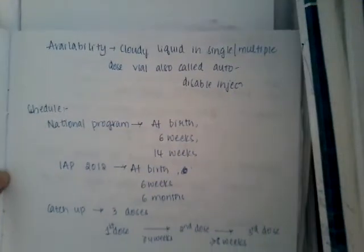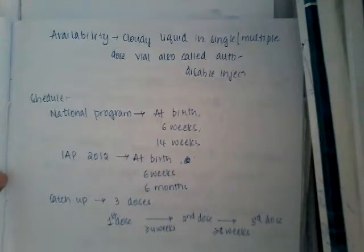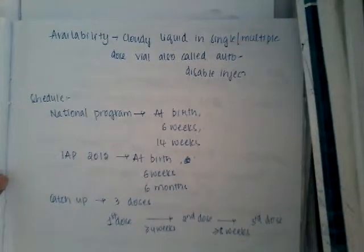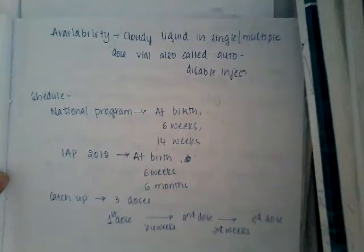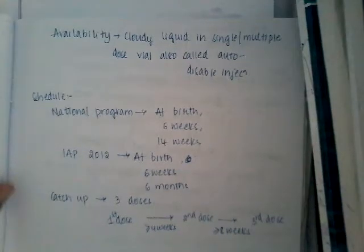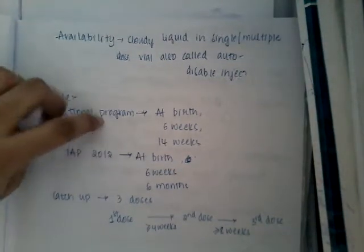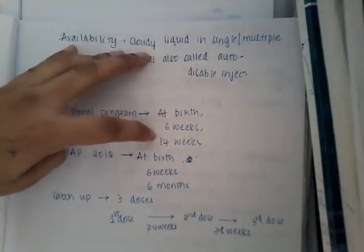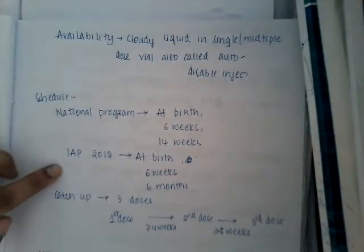In the national program, the schedule is given at birth, 6 weeks, and 14 weeks. According to the Indian Academy of Pediatrics 2012, it is given at birth, 6 weeks (1 month), and 6 months. So to remember: national program gives it at birth, 6 weeks, and 14 weeks; IAP 2012 gives it at birth, 6 weeks, and 6 months.